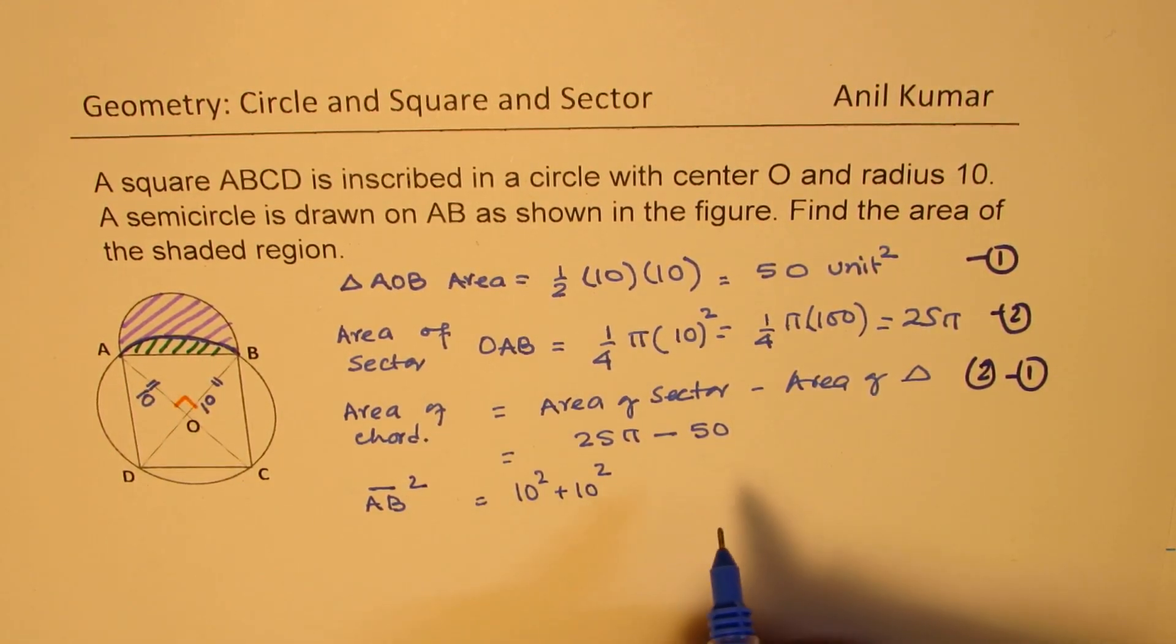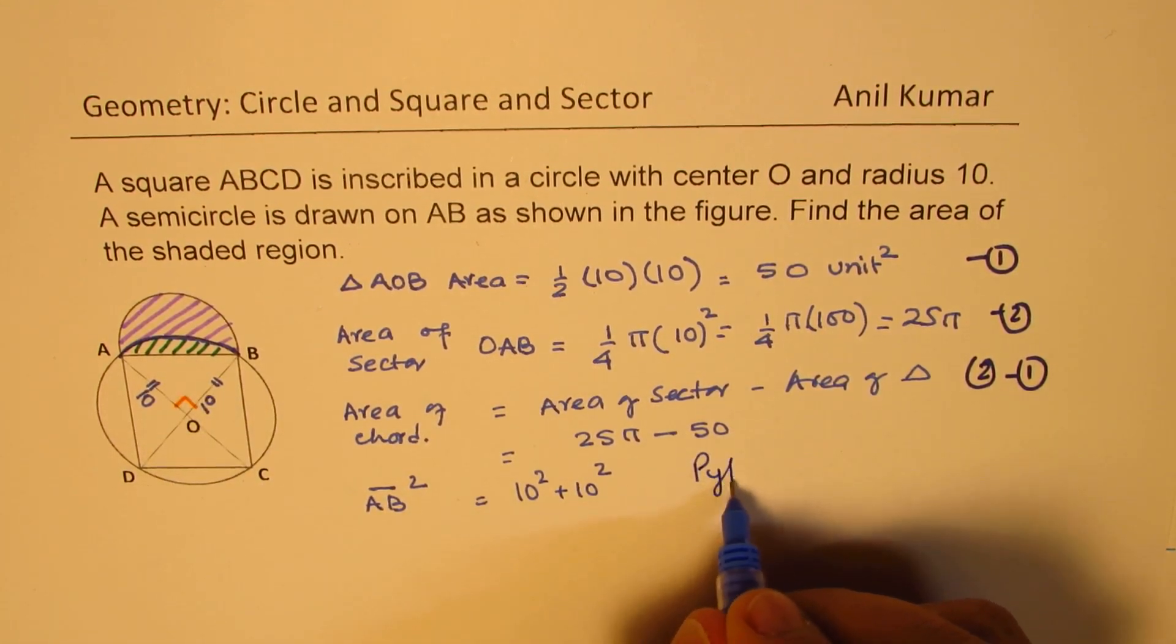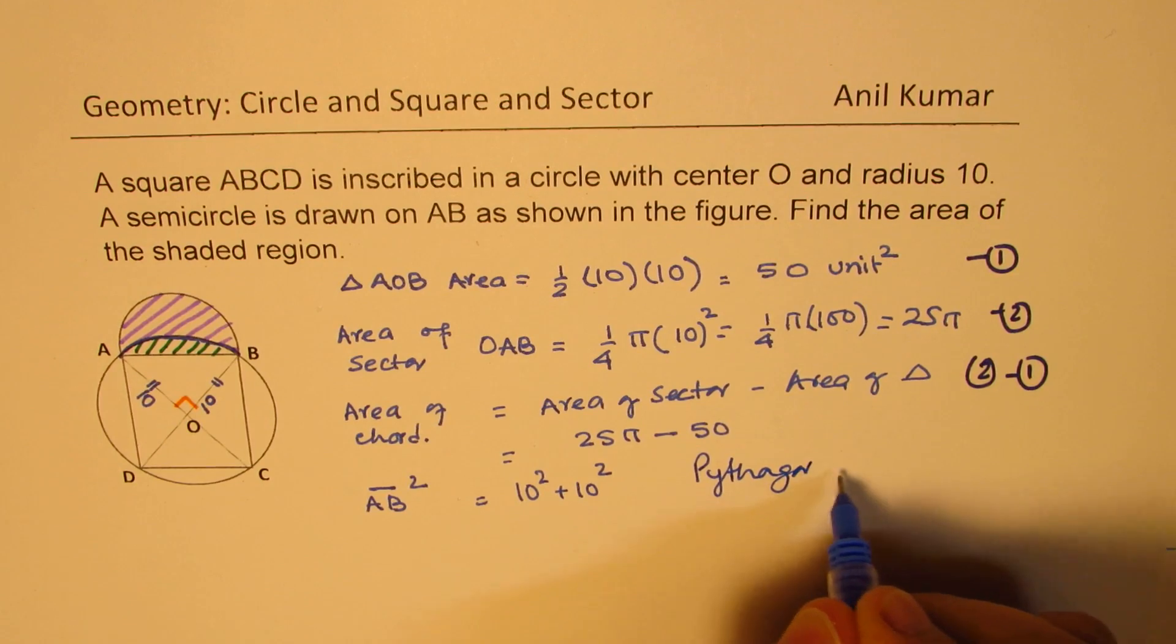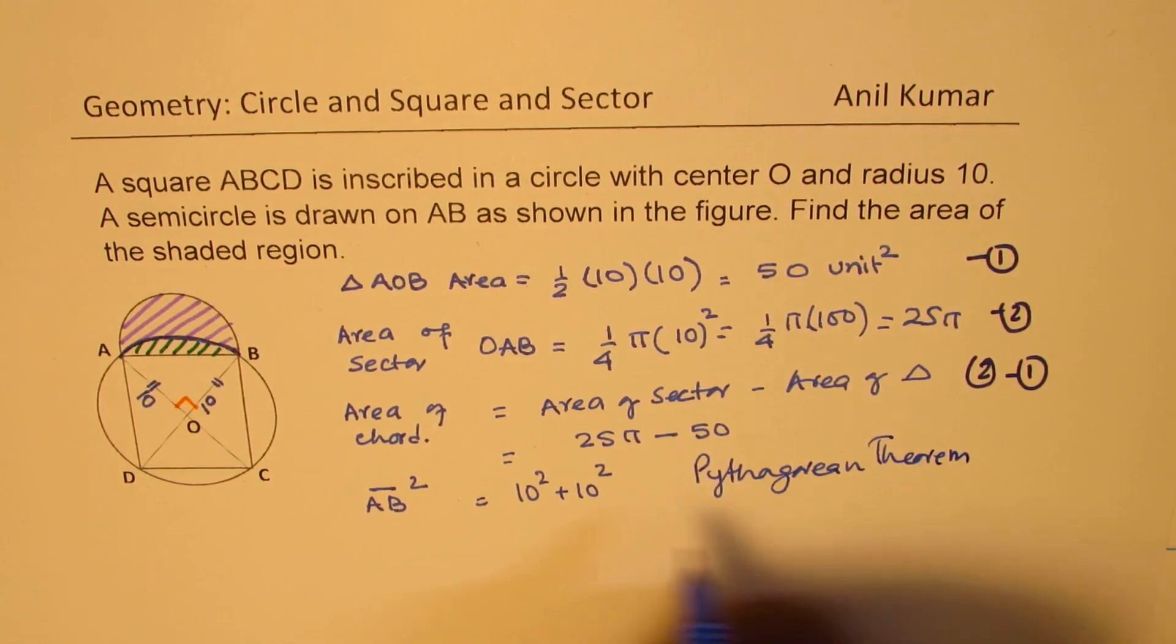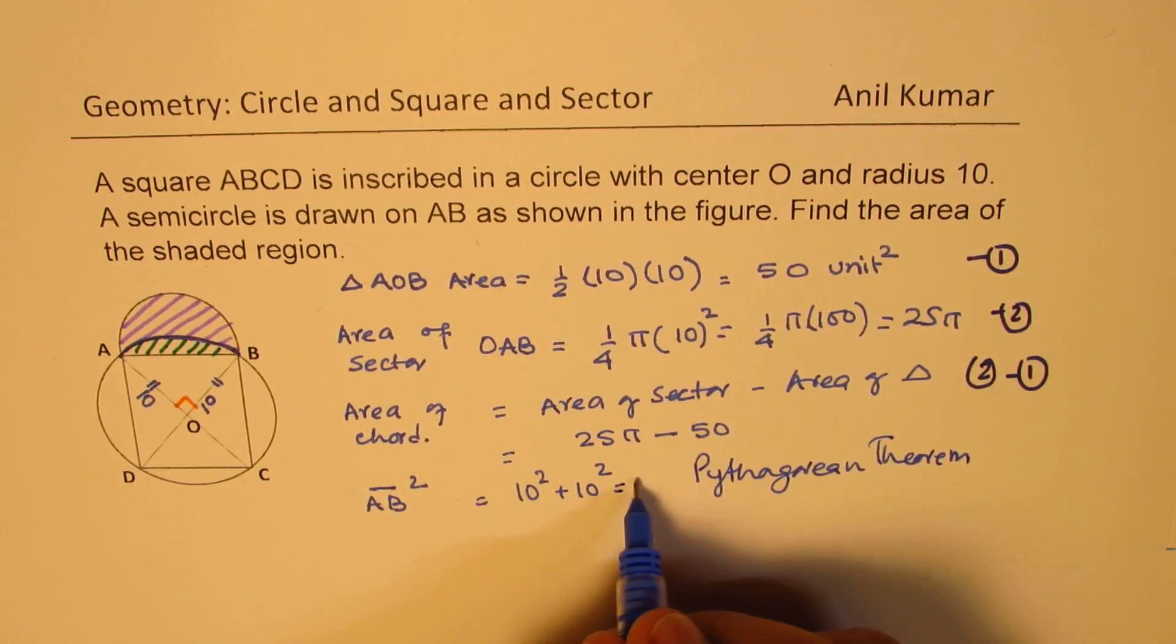That is the hypotenuse. Pythagorean theorem, clear? So which is clearly 100 + 100, which is 200.